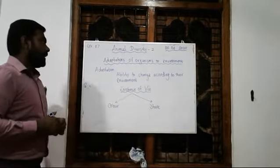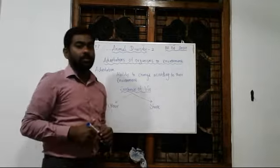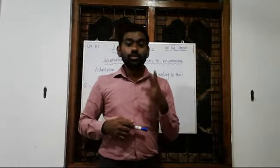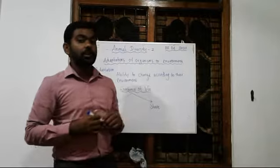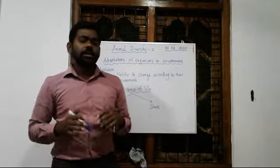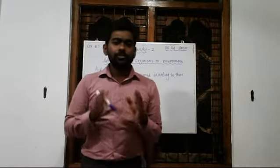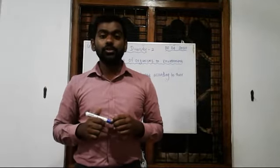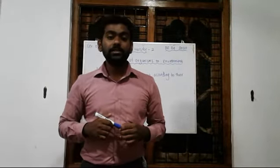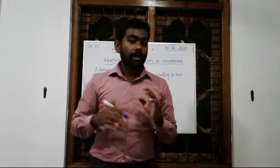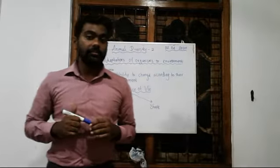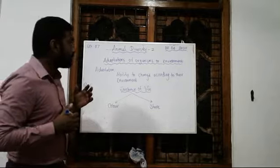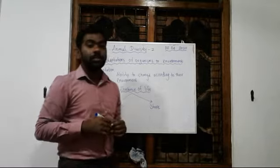Here we study the second chapter of animal diversity — the second video lesson. The very special word for this lesson is: adaptations. I hope you have done the glossary from my previous assignment. If you have done that, it will be very clear for you. Adaptations — adaptations of organisms to their environment.